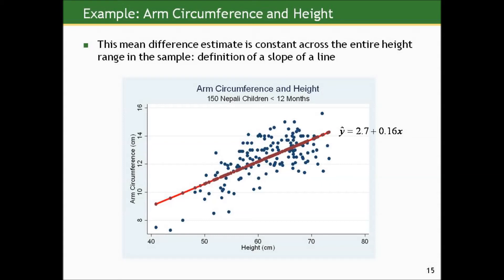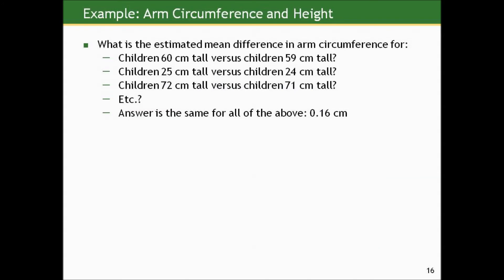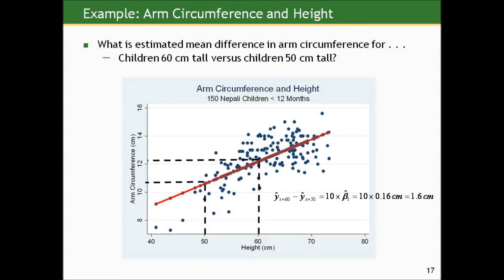This is an amazing piece of information — one number that tells us the story of arm circumference and height for the entire sample. One key property of a slope is that it's constant across the entire height range, by definition of a line. So the mean difference in arm circumference holds for any one-unit difference in height across the entire height range: whether comparing children 60 vs. 59 centimeters, 25 vs. 24, or 72 vs. 71 centimeters, the answer is the same — 0.16 centimeters. That's the beauty of the slope.